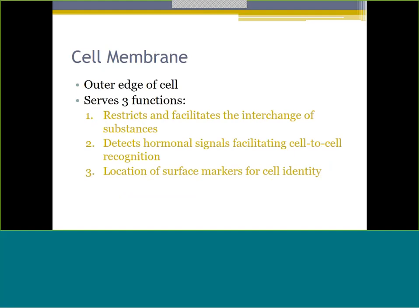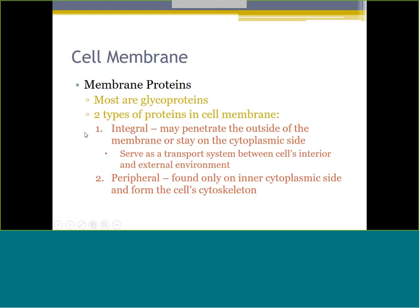We'll start with the cell membrane - that is the outer edge of the cell. It has functions in that it helps interchange substances from the inside to the outside, detects hormone signals, and handles cell-to-cell recognition. Located on the surface are surface markers, which we'll get into more in hematology. The cell membrane is made up of glycoproteins - two main types: integral and peripheral. Integral can penetrate to the outside and serves as the transport system. Peripheral is only on the inner cytoplasmic side and helps with the cytoskeleton structure.